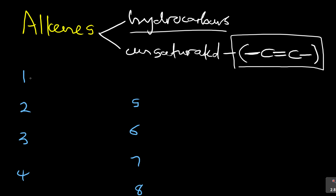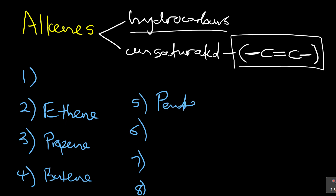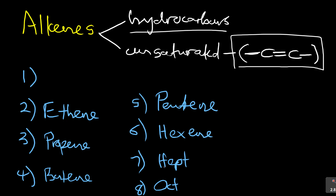Let's start with the first one. We start from number two: ethene, then propene, then butene, then number five — remember this — it's pent, like pentagon, a five-sided shape, so you say pentene. Number six is hex, number seven is hept, number eight is oct. So: hexene, heptene, octene. Now I told you before that these are linked to alkanes — remember ethane, propane, butane, pentane, hexane, heptane, octane. The only difference between alkanes and alkenes is the suffix: alkanes are A-N-E, alkenes are E-N-E. That's the keyword — E-N-E.